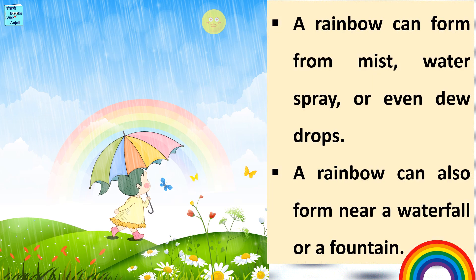A rainbow can form from mist, water spray, or even dew drops. A rainbow can also form near a waterfall or a fountain.